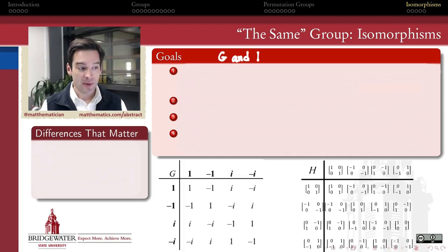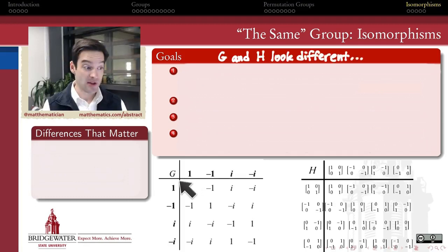For example, suppose I take these two groups. The group on the left, G, its elements are complex numbers: 1, -1, i, -i. Its operation is multiplication of complex numbers. So for example, i times i gives me -1. Here's a Cayley table for that group whose objects are complex numbers.